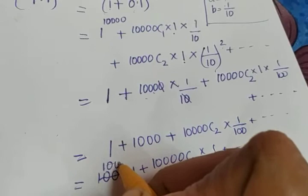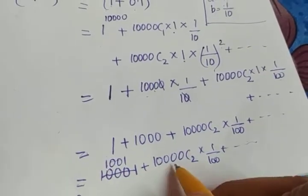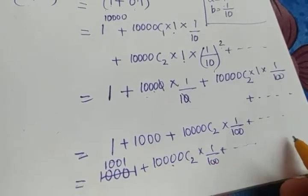So it is actually greater than - it's 1001 by mistake. So it is 1001 plus 10,000C2 into 1 by 100 plus etc.